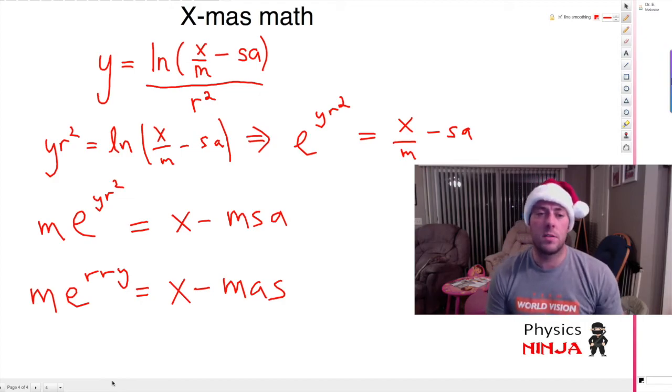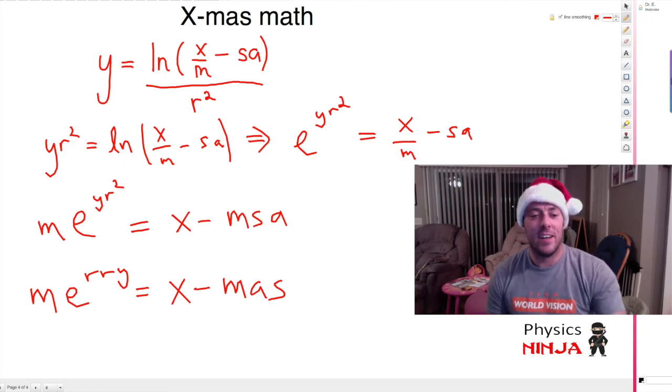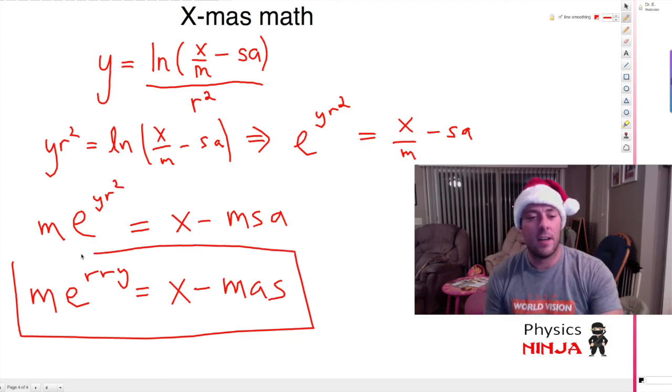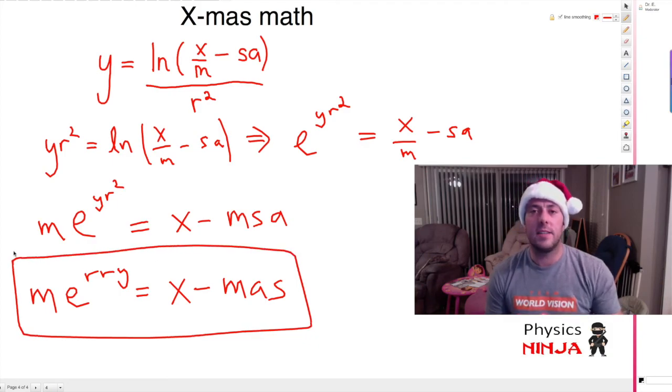And there we have it, folks. Y equals ln of x over m minus sa divided by r squared equals a Merry Christmas to everybody out there. Hope you guys have a great holiday season, and Merry Christmas to you and your family. Bye-bye.